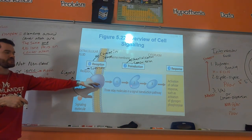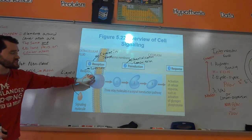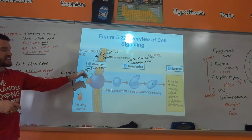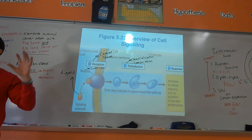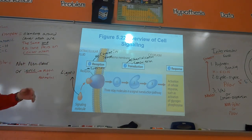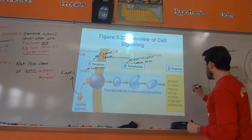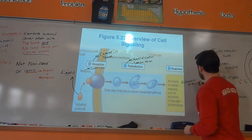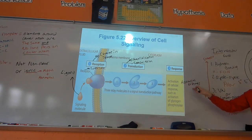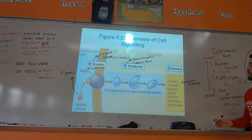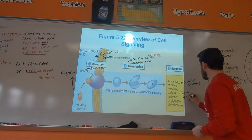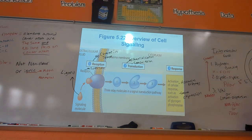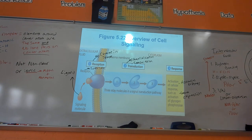Amplification doesn't happen as much with intracellular signaling, but when a signal binds to a membrane receptor, you get amplification via second messengers, kinases, and so on. Ultimately we're trying to lead to some sort of response — either activating enzymes to drive chemical reactions, or gene expression, meaning turning on certain genes to produce certain proteins in response to that message.